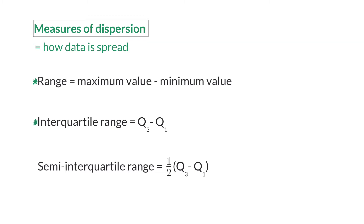The interquartile range is the difference between Q3 and Q1. Q1 indicates where the bottom quarter of the data set lies, and Q3 indicates where the top quarter of the set starts. The semi-interquartile range is simply half of the interquartile range.